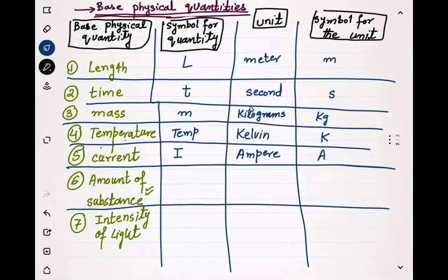Amount of substance: the symbol is smaller n, the unit is mole, represented by smaller n. Intensity of light is represented by capital I. The unit is candela, represented by cd. This seventh quantity is not very common or important.